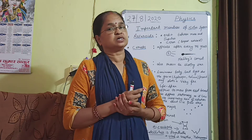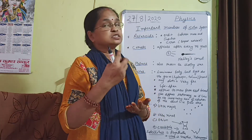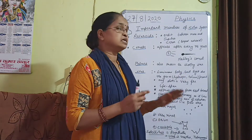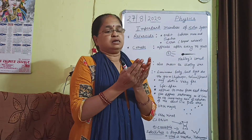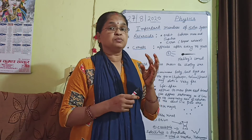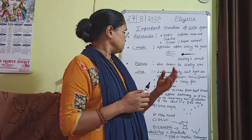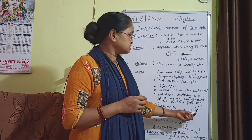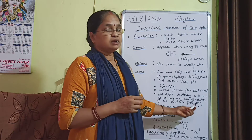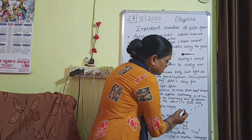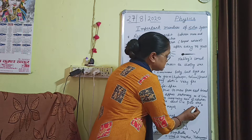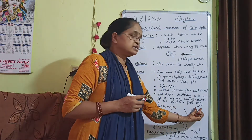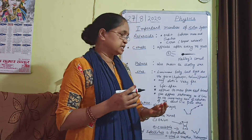One star appears stationary because it lies on the imaginary axis of rotation of the Earth — that star is known as the Pole Star. It is used to indicate the poles of the Earth, that is the North Pole and South Pole. Next we come to constellations — a group of stars forming a recognizable pattern. One example is Ursa Major, which has seven bright stars that, when joined, look like a spoon or a ladle.